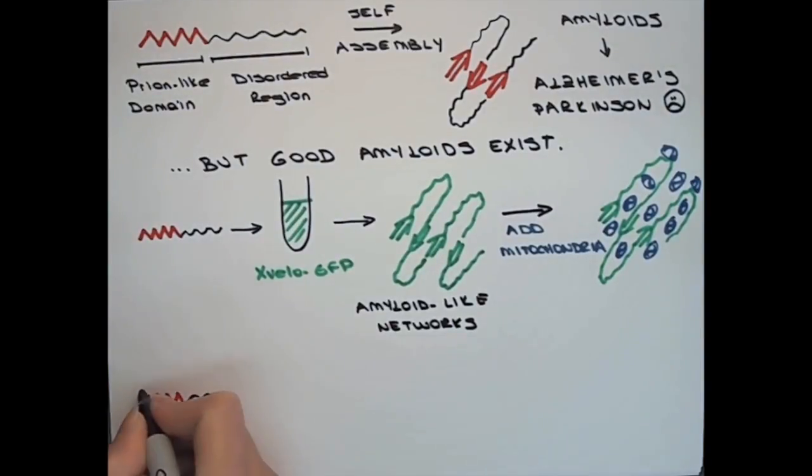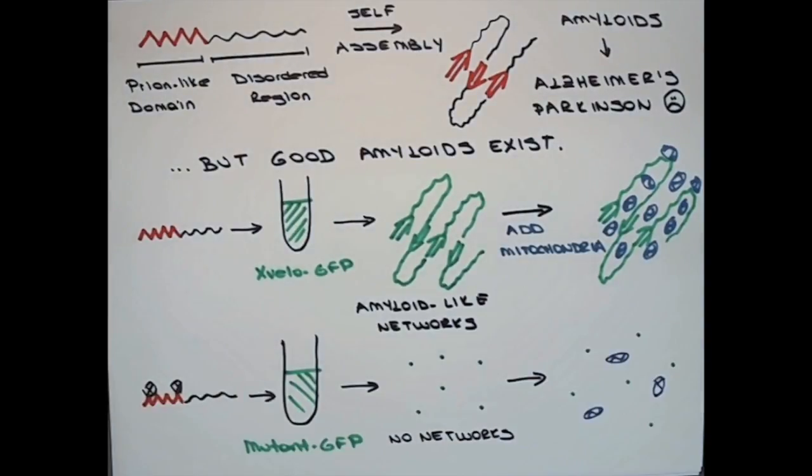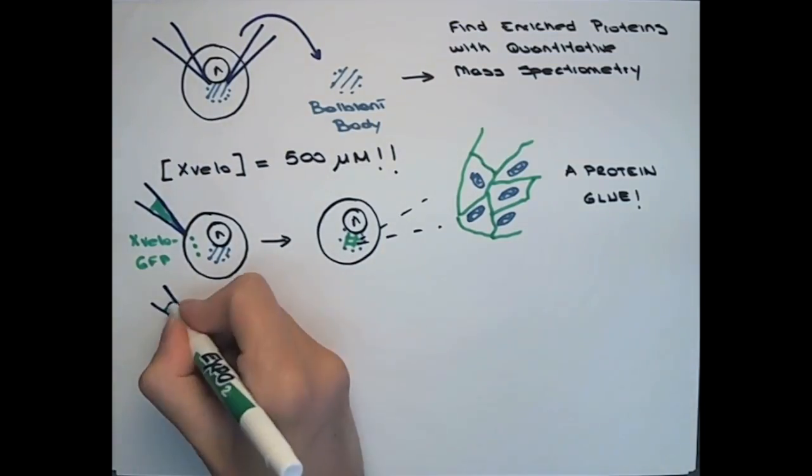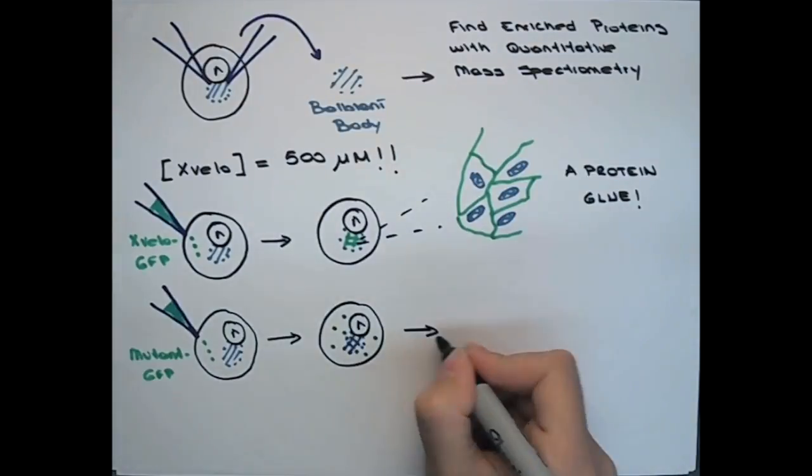But if we mutate Xfelo's prion-like domain, it no longer acts like an amyloid in a test tube, and it no longer joins the matrix in the balbionibody when we inject it into oocytes.